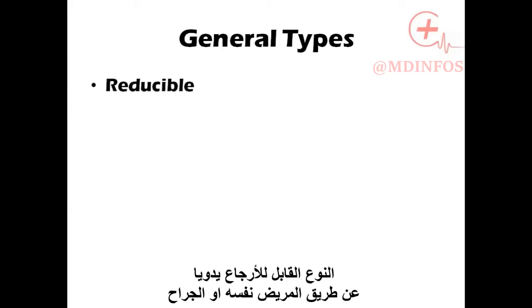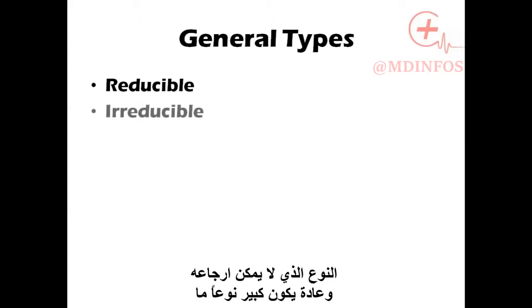We have general types of hernia and specific types of hernia. General types include the reducible hernia, which can be returned back to its place by the patient or the surgeon manually, and the irreducible hernia, which cannot be returned to its place and is often a large hernia.